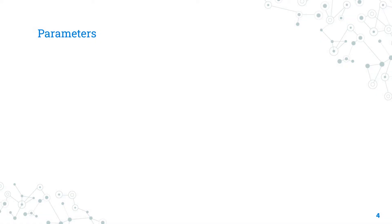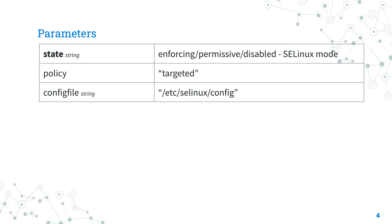Let's see the parameters of the SELinux Ansible module. The only required parameter is state, which is the SELinux mode. For this parameter three options are available: enforcing, permissive, and disable. When the system is in enforcing or permissive mode, you also need to specify the policy to enable. The parameter policy is designed for this purpose — for example, targeted policy. By default, all these values apply to the SELinux configuration file saved in /etc/selinux/config. You can customize this using the config file parameter.